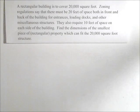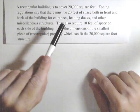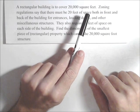In this video we're going to look at a constrained optimization problem. We have a rectangular building that's to cover 20,000 square feet.